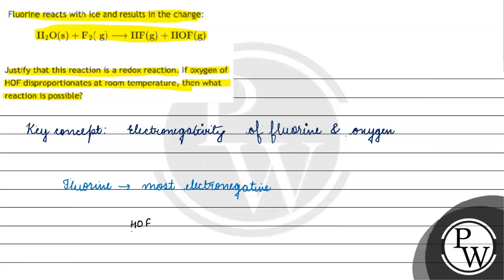In HOF, the oxidation state of fluorine will be minus 1. For hydrogen, it will be plus 1 in most other cases. So the oxidation state of oxygen in HOF will be 0.